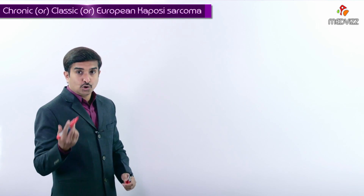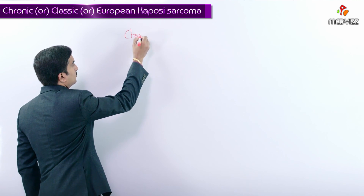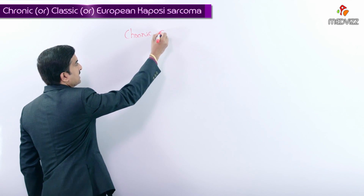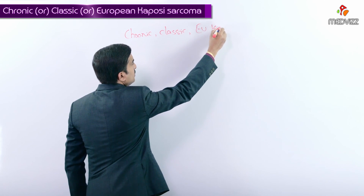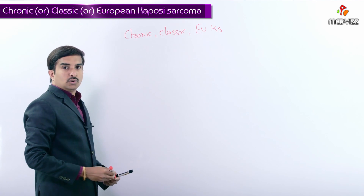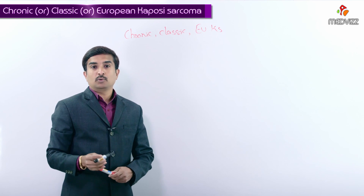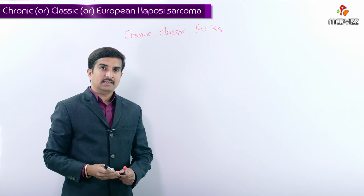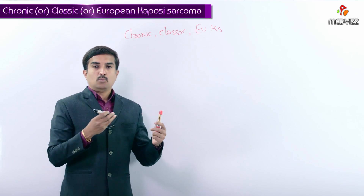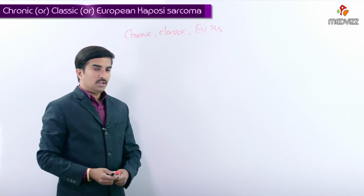First, let us talk about the chronic, classic, or European Kaposi sarcoma. For every type, we need to discuss the predominant risk groups, the anatomical lesions, and the prognosis.